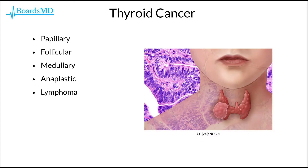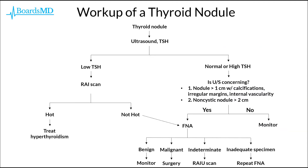In this series, we are going to focus on thyroid cancer. However, before we delve into these specific types of thyroid cancer, let's first review our workup of the thyroid nodule, which is often going to be a piece of the presentation in patients with malignancies of the thyroid. Generally speaking, if we have a patient with a thyroid nodule, our first step in the workup is going to be to get an ultrasound of the thyroid, as well as a TSH.